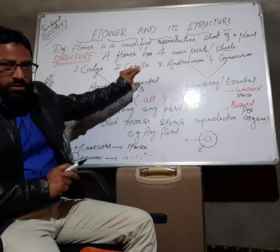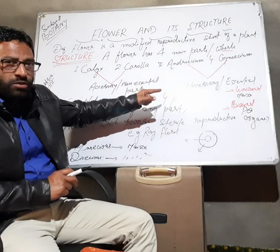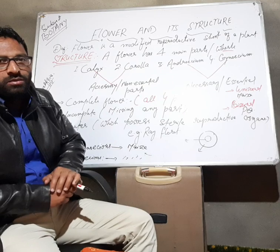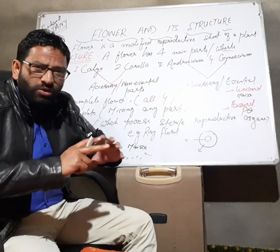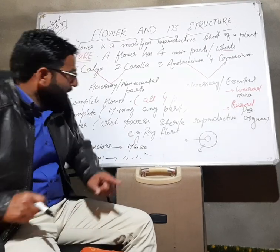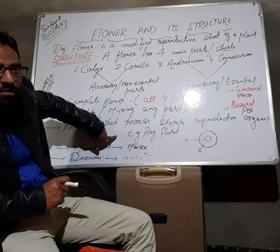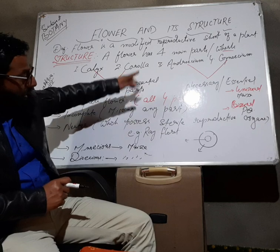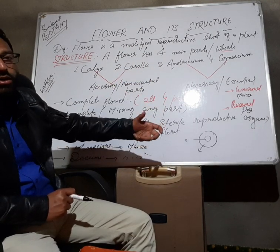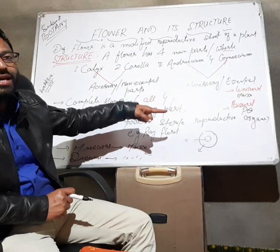If a plant possesses unisexual flowers but both male and female unisexual flowers are present on the same plant — like maize — that condition of the plant is called monoecious. When the male and female flowers are present on two separate plants, the condition is known as dioecious, and the plant is called a dioecious plant.